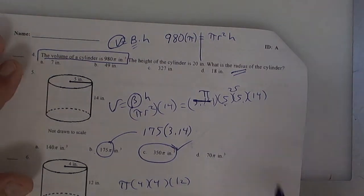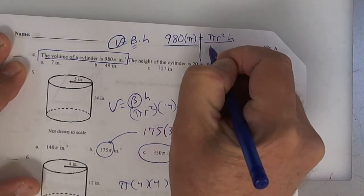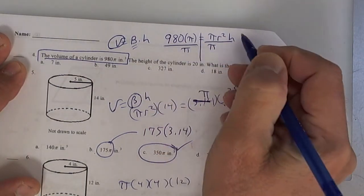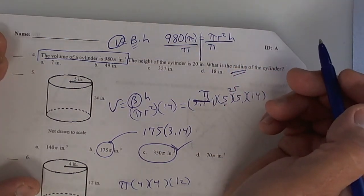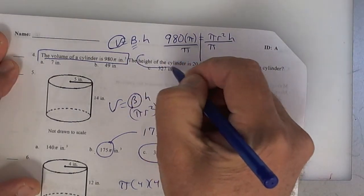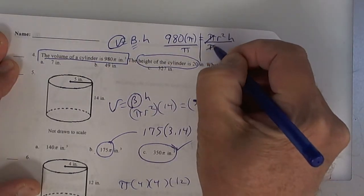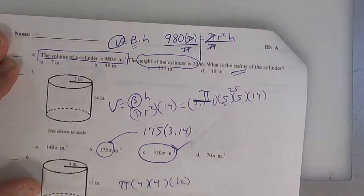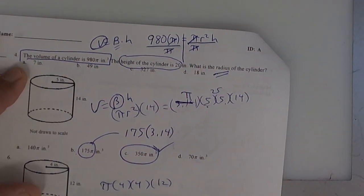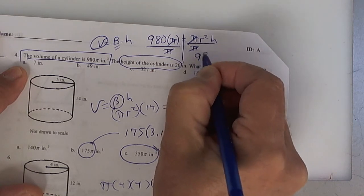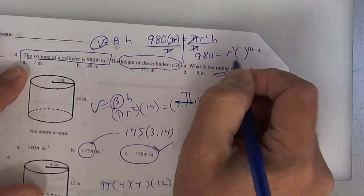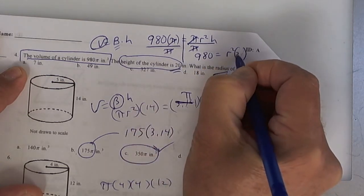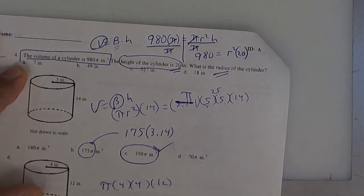If you divide both sides by pi, the pi's cancel — knock out the pi's. So now your equation reduces to 980 equals radius squared times the height. The height is right here, so put twenty. Any questions so far?